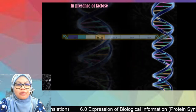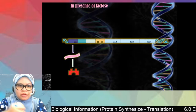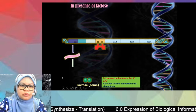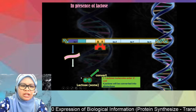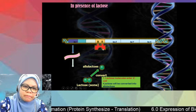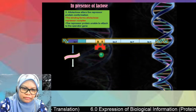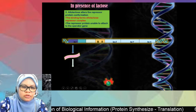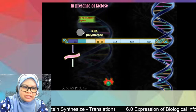The second situation is in the presence of lactose. When E. coli is cultured in a medium containing lactose, the lac operon is switched on. The regulator gene lacI still codes for repressor protein, and the repressor protein initially binds to the operator. However, in the presence of lactose, lactose is converted to its isomer called allolactose. Allolactose binds to the repressor protein, causing a conformational change in the repressor protein, which detaches it from the operator.